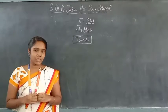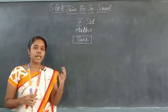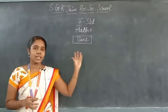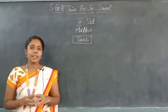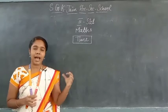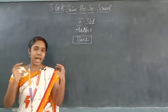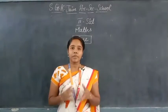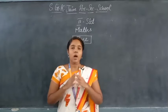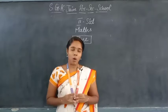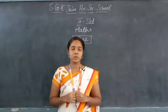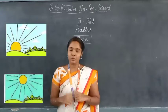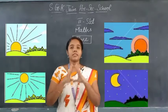Look at this activity. Each and every activity is done at a specific time. You wake up, brush your teeth, and go to school in the morning; play with friends in the evening; have dinner and go to bed at night. From this activity, you should understand that in one day, we do all these activities at different parts of time. So, one day is divided into morning, afternoon, evening, and night — four parts.